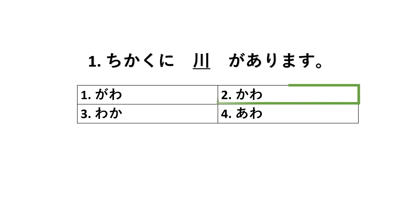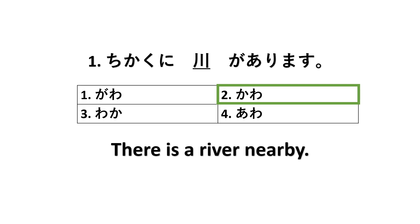The correct reading is the second one, kawa. What I did was add the three other distractions to be incorrect answers, because the paper that I got only shows the correct answers. I took the liberty of adding the other three incorrect options in the choices. The translation is: there is a river nearby.